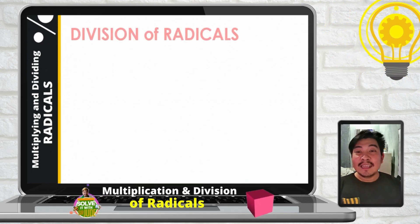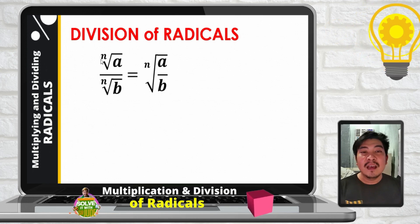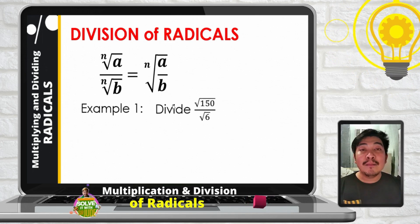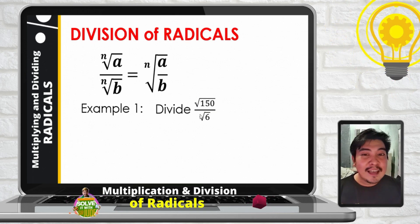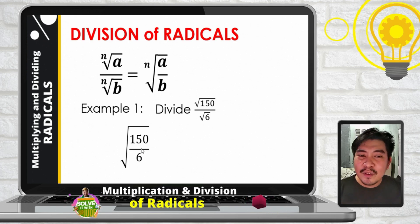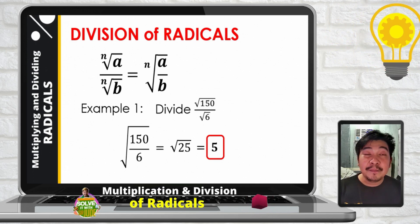We are now done with multiplication. Let us now go to division of radicals. If in multiplication we use the product rule, in division we use the quotient rule of radicals: the n-th root of a divided by the n-th root of b equals the n-th root of a over b. Example number 1: divide square root of 150 by square root of 6. Since they have the same index, we combine them into one radical: square root of 150 divided by 6. That gives square root of 25, and square root of 25 is 5. The final answer is 5.